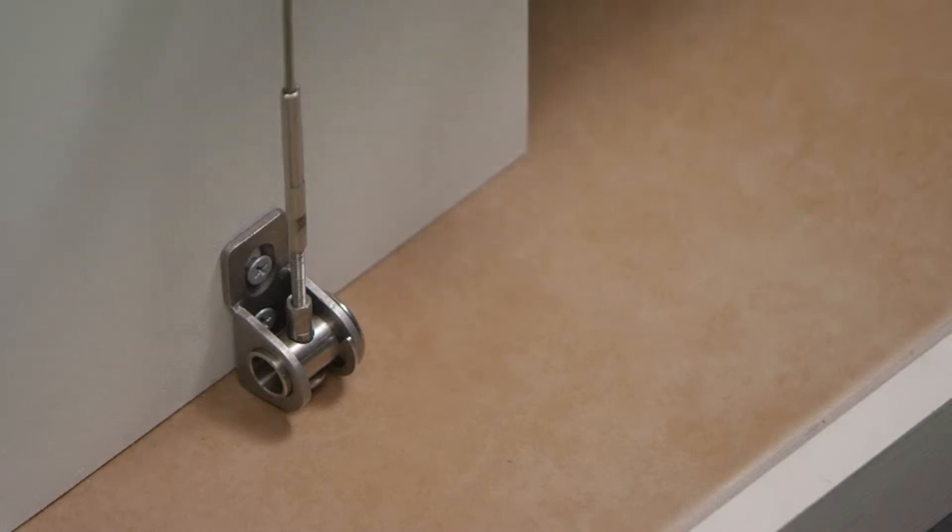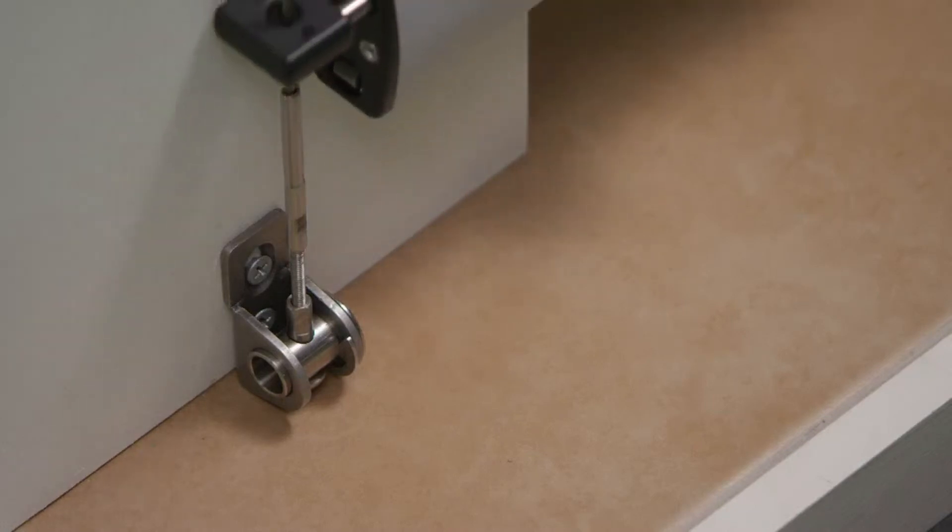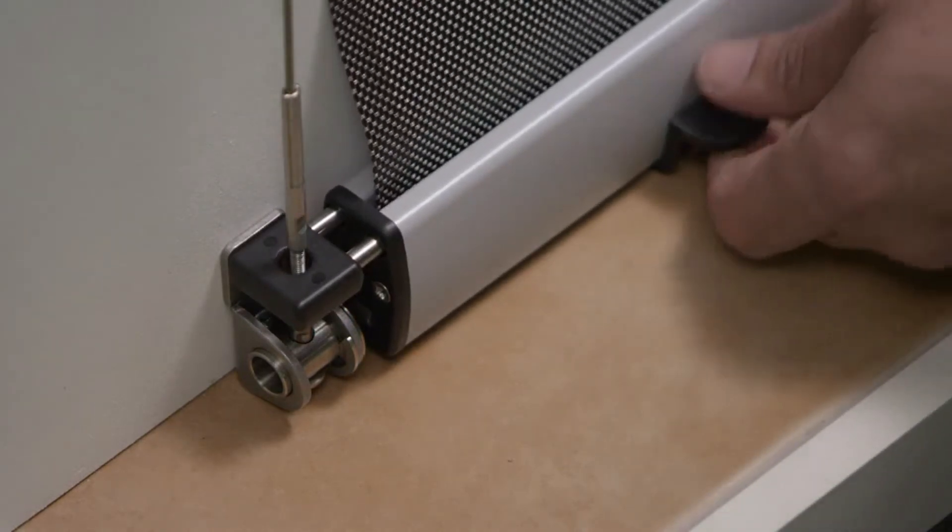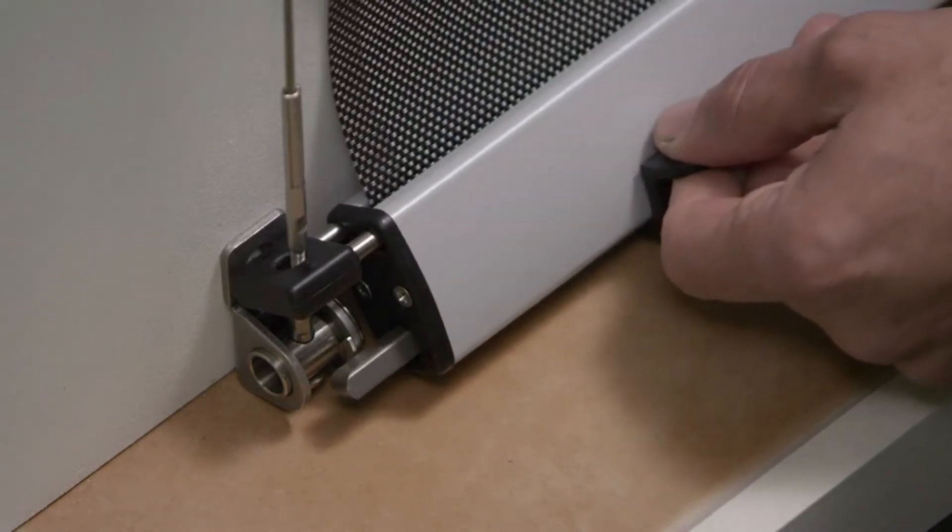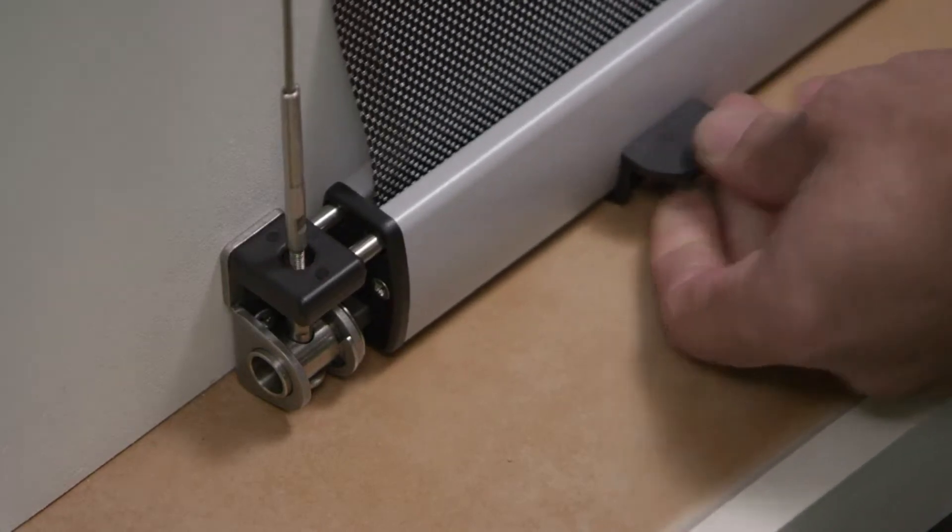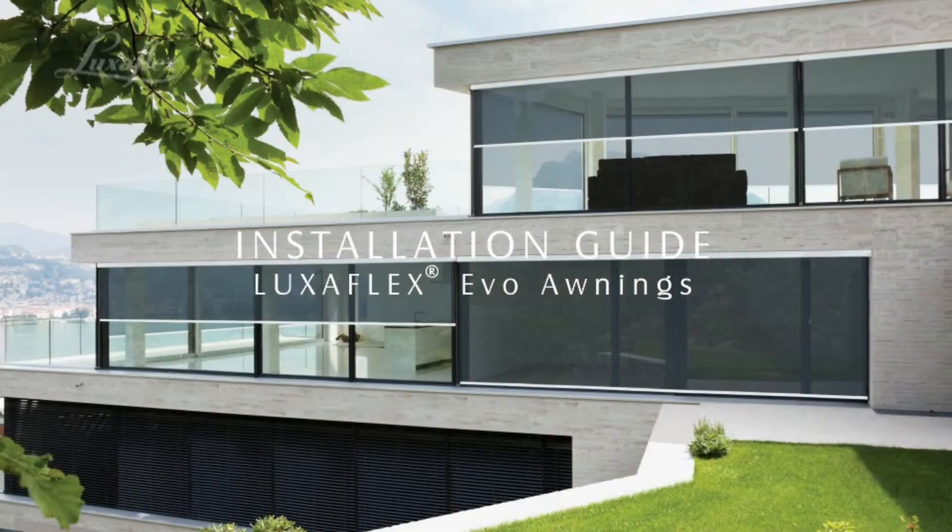If ordered, the optional locking bolts will be supplied pre-installed in the bottom rail. Lower awning to the bottom cable guide brackets. Slide the locking bolt into the bottom cable guide bracket and apply tension by turning the crank. Installation is now complete.